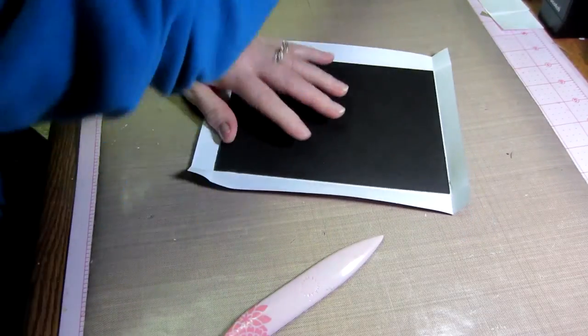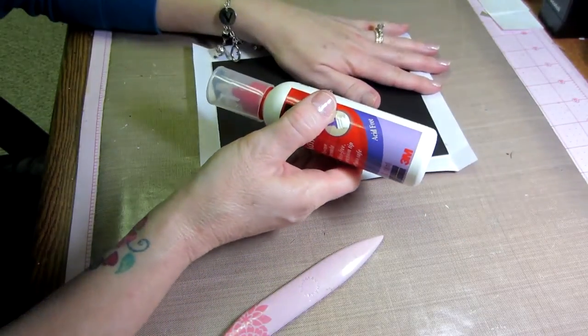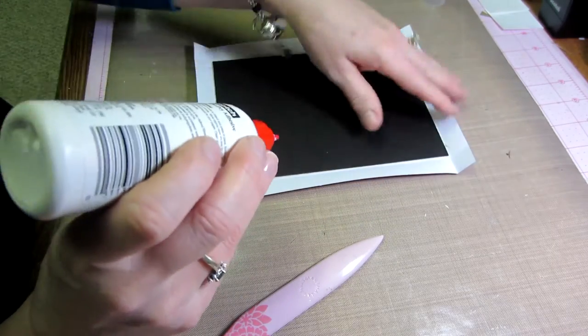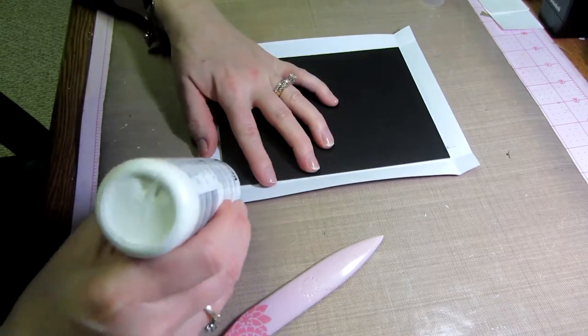And then you're going to take wet glue for this. You could use score tape again, but this is construction. I don't want this coming off at some point, so I'm going to use wet glue.